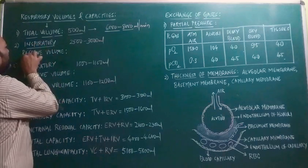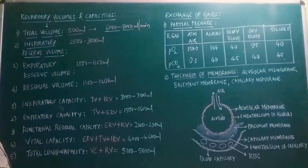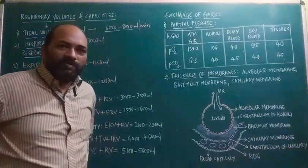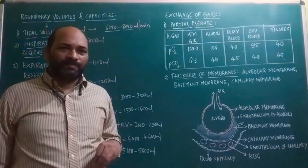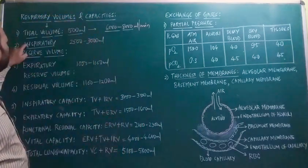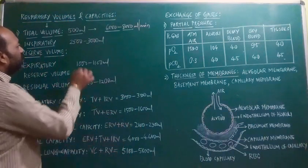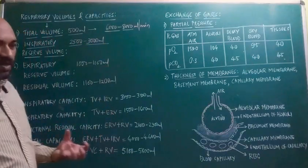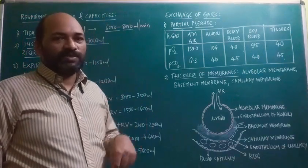Next after tidal volume is inspiratory reserve volume. Inspiratory reserve volume refers to the additional volume of air a person can inspire during forcible inspiration. This inspiratory reserve volume is around 2,000 to 3,000 ml — that is the additional air which enters into the lungs during forced breathing.